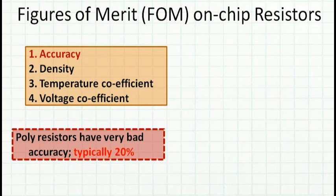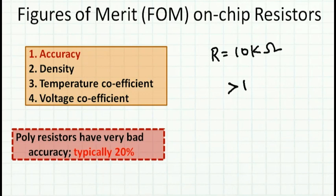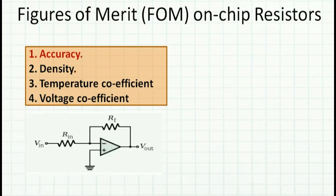What does this imply? Suppose I fabricate a resistor with a value of 10 kilo ohms with 20% accuracy. The resistance can go as high as 12 kilo ohms or as low as 8 kilo ohms. This is a challenge we need to address.